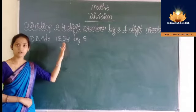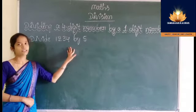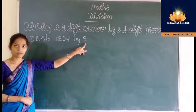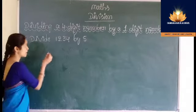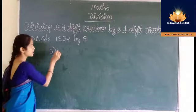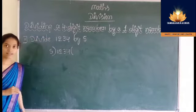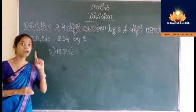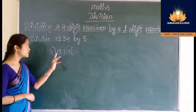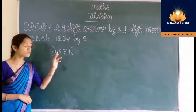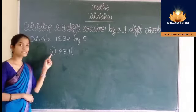Divide 1234 by 5. Here the divisor is 5 and the dividend is 1234. Since the divisor is a 1-digit number, we have to consider the leftmost digit of the dividend, that is 1. But this 1 is less than 5, so we cannot divide 1 by 5.